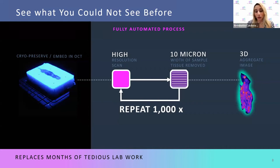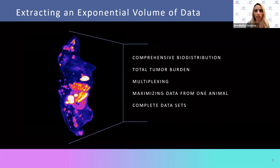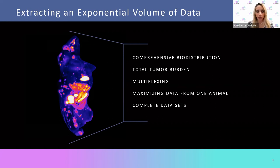This replaces sometimes tedious lab work and is automated with our system. From one sample — and this is an ex vivo technique — you're able to interrogate data points you previously didn't think to. You can get comprehensive biodistribution for drug discovery, determine the impact of tumor burden in oncology models, design multiplexing experiments, and truly maximize the data from one animal. You'll have a complete dataset for time course studies or drug discovery applications.